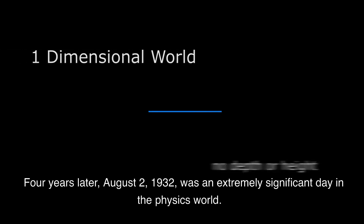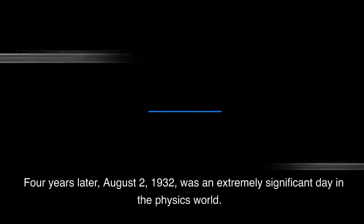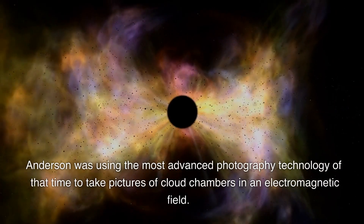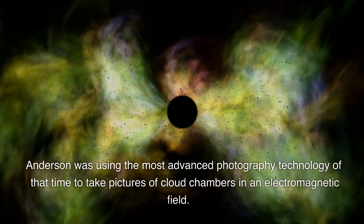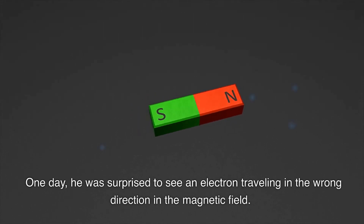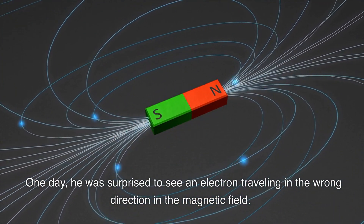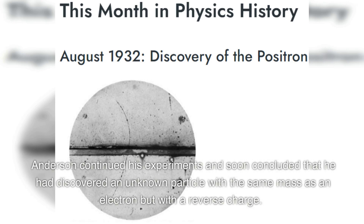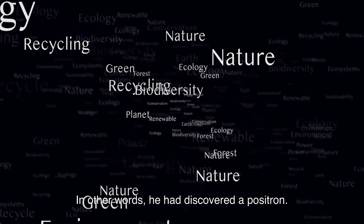Four years later, August 2, 1932, was an extremely significant day in the physics world. A young physicist named Carl Anderson announced a significant discovery. Anderson was using the most advanced photography technology of that time to take pictures of cloud chambers in an electromagnetic field. One day, he was surprised to see an electron traveling in the wrong direction in the magnetic field — this electron was moving backward, which seemed impossible. Anderson continued his experiments and soon concluded that he had discovered an unknown particle with the same mass as an electron but with a reverse charge. In other words, he had discovered a positron.